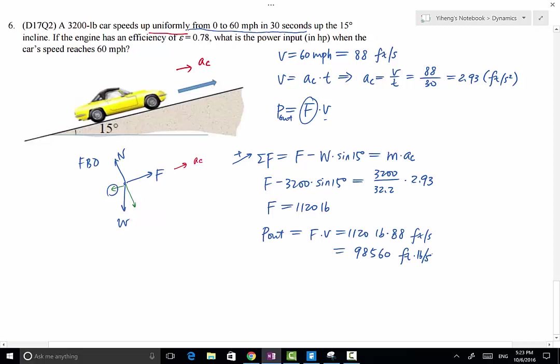And one horsepower equals 550 foot-pounds per second. And therefore from there, we can do the unit conversion, and that equals 179.2 horsepower.